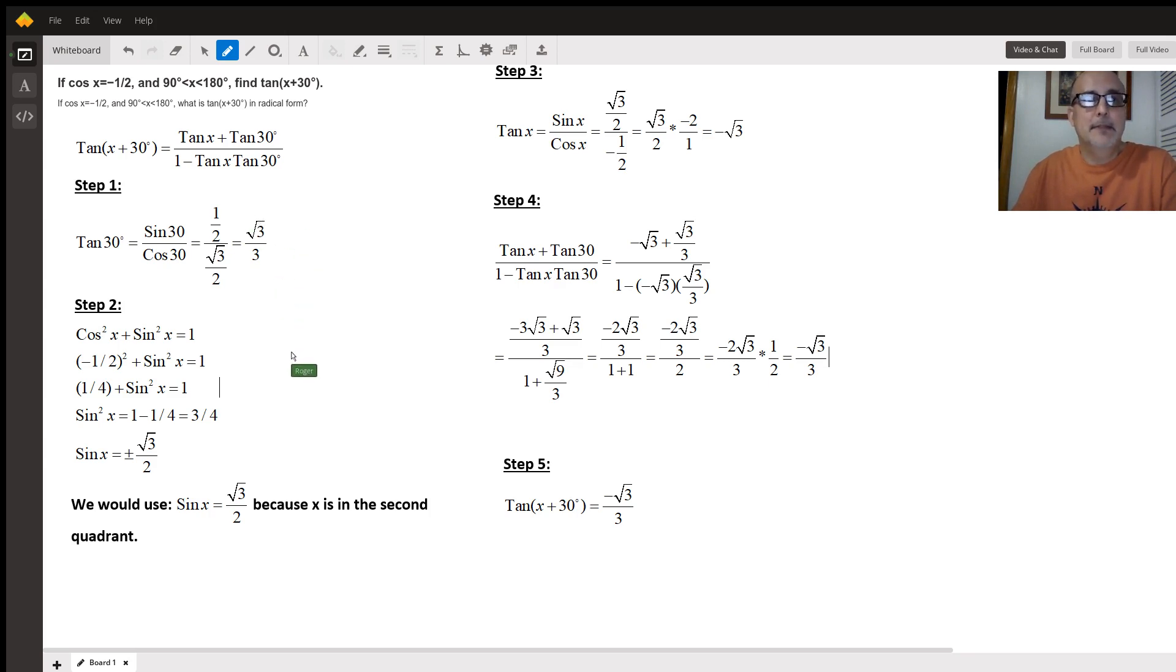The second piece of the puzzle is I need to find what sine is and I'm using the Pythagorean theorem which is cosine squared x plus sine squared x equals one. I'm using cosine of x equals negative one half. I'm going to put that in and square it so that's one fourth plus sine squared of x equals one.